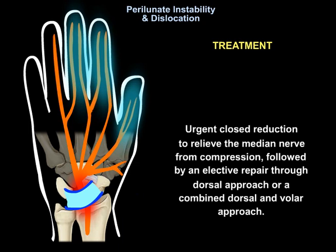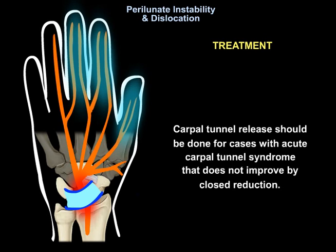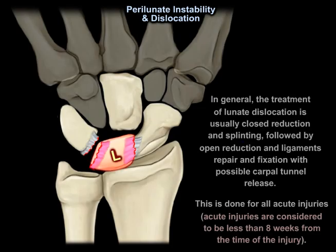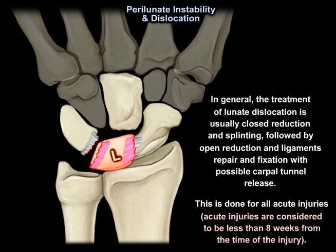The treatment is urgent closed reduction to relieve the median nerve from compression, followed by elective repair through a dorsal approach or a combined dorsal and volar approach. Carpal tunnel release should be done for cases with acute carpal tunnel syndrome that does not improve with closed reduction. In general, treatment includes closed reduction and splinting, followed by open reduction, ligament repair, and fixation of the carpal bones with possible carpal tunnel release. This is done for all acute injuries, defined as less than eight weeks from the time of injury.